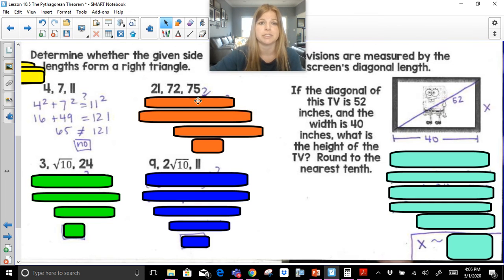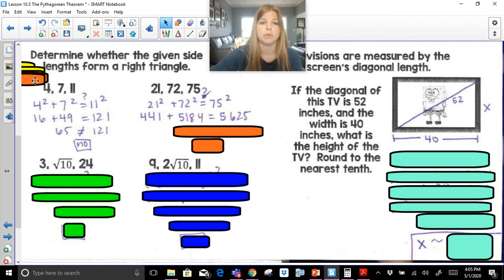those could not be the sides of a right triangle. If I took the next ones, and I plug those in, 21 squared plus 72 squared equals 75 squared, I do actually get the same answer on both sides, so yes. And this is actually a multiple of the triple 7, 24, 25.